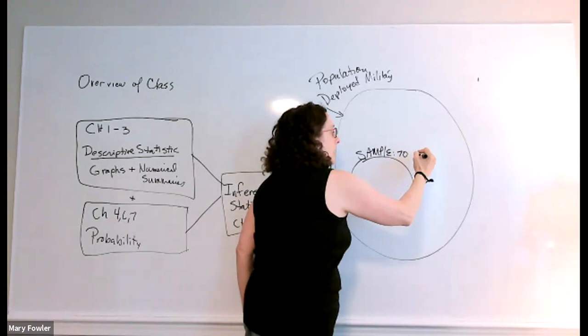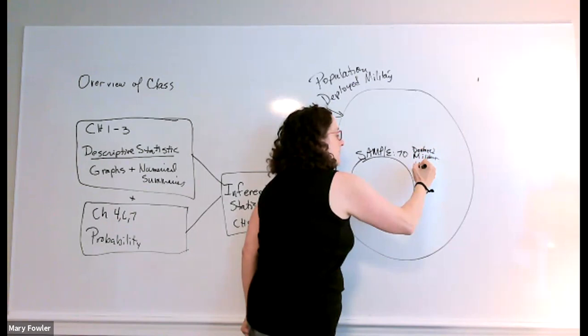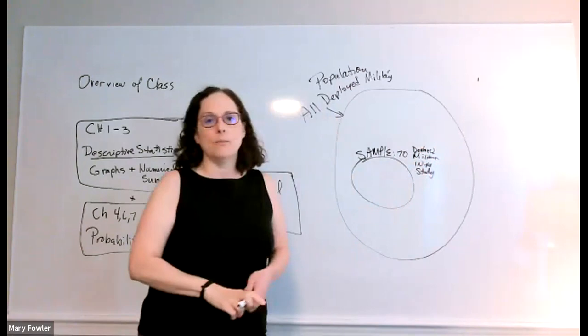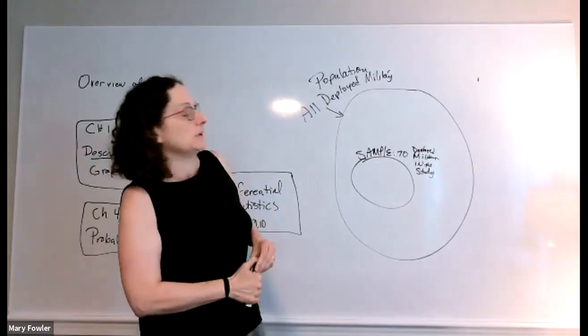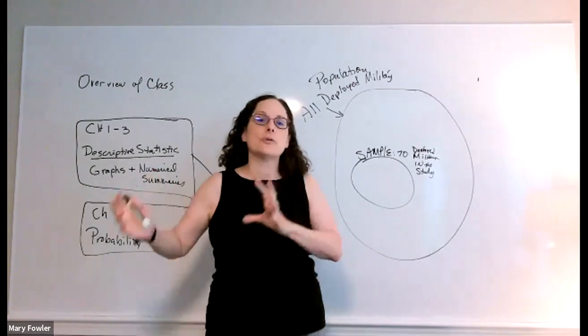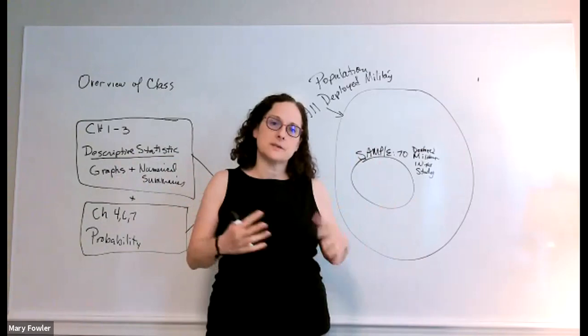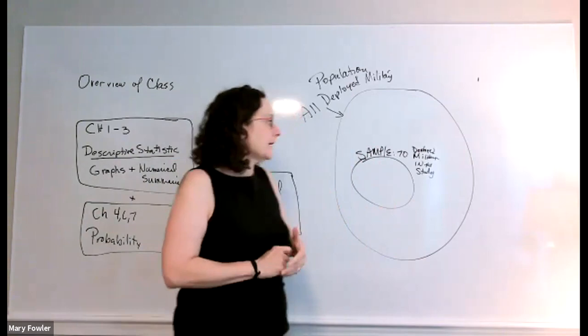A sample is a subset - in this case it was the 70 deployed military in our study that we got to measure. In this study, 35 of the deployed military troops were given yoga three times a week for three weeks and another 35 were not. We measured a variety of things like anxiety and quality of life, sleep before those three weeks and after those three weeks. That was an overview of how that study worked.